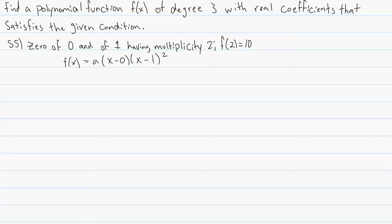So from here, we could say that f of 2 is equal to a and for x, we're going to put in 2 and 2 minus 0 is simply 2. Here, we're going to put in a 2 minus 1 squared.